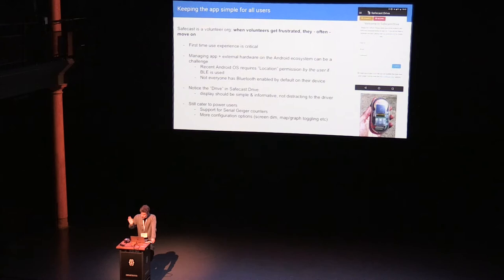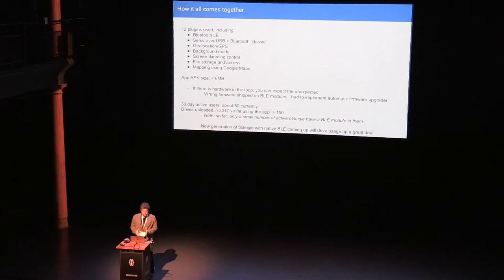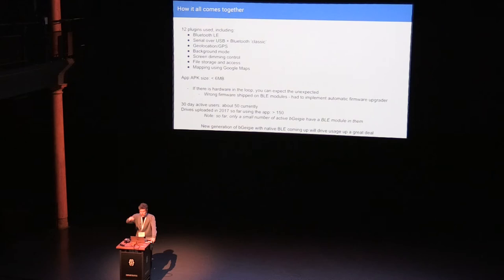The app also supports serial over USB and serial over Bluetooth, covering various kinds of Geiger counters. As a conclusion, this one app contains about 12 major plugins — from Bluetooth LE to serial over USB or Bluetooth, geolocation, background mode, screen dimming to keep the screen awake on your dashboard, file storage, and mapping. For mapping, I didn't touch on it much, but it uses the HTML version of Google Maps.